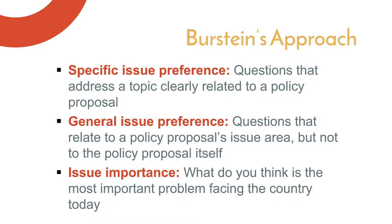The second type is general issue preference — questions that relate to a policy proposal's issue domain but not to the exact policy itself. An example question: 'Should the U.S. government spend more on health care?' This would relate to a proposal to provide more health information and counseling to Medicare recipients. Finally, there is issue importance — 'What do you think is the most important problem facing this country?' Burstein collected responses to that question and categorized an issue as salient if at least one percent of respondents chose it, then matched this to his policy proposals dataset.